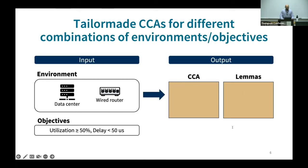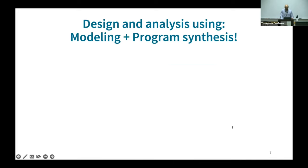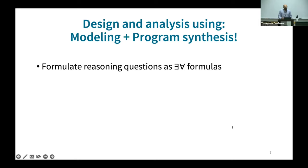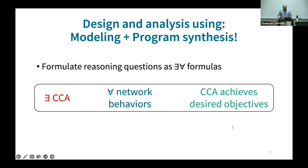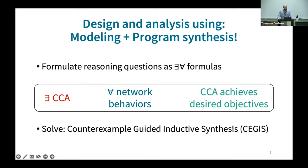We can use this to build tailor-made CCAs for different combinations of environments and objective pairs, and retune our CCAs as assumptions about our networks change. We leverage advances in mathematical modeling and program synthesis, formulating reasoning questions as there-exists-for-all formulas. For example: does there exist a CCA such that for all the specified network behaviors, the CCA achieves its desired objectives? We solve such formulas using counterexample-guided inductive synthesis, or CGIS in short.